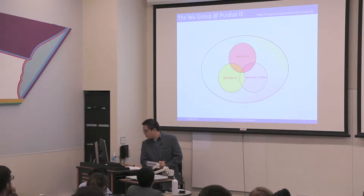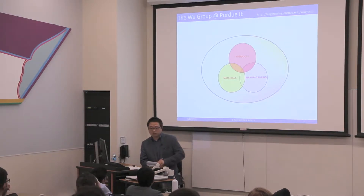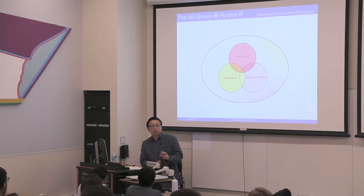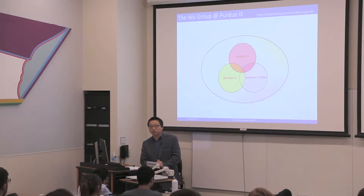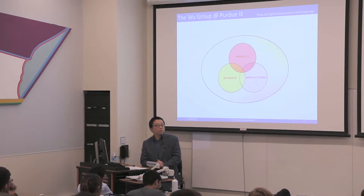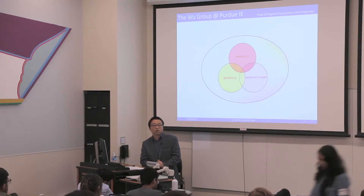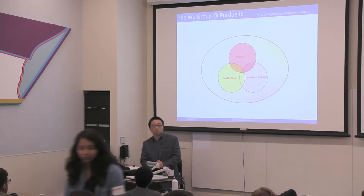My research here at Purdue IE is mainly focused on nano manufacturing and advanced manufacturing. You probably have heard from the previous professor that we have some of the non-traditional disciplines areas here at Purdue IE compared to other programs in the nation. One of them is manufacturing, and we have a very strong cohort of faculty on nano manufacturing using non-traditional processes to tailor the properties of non-traditional materials for some very cool, exciting applications.